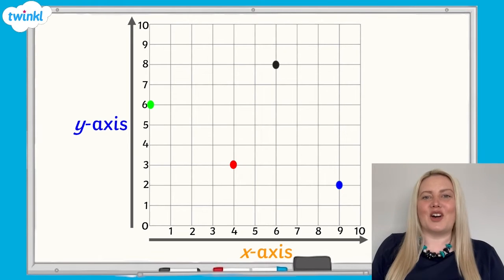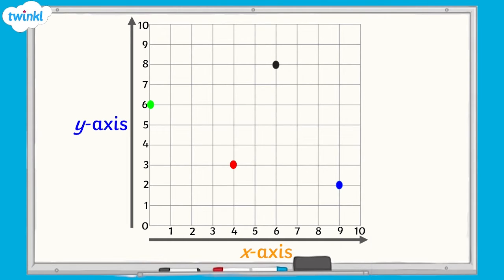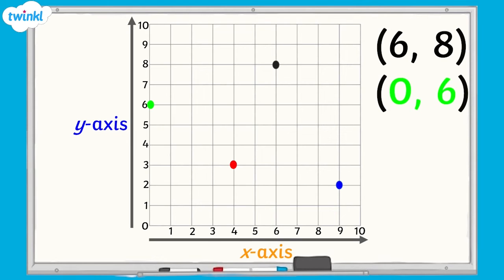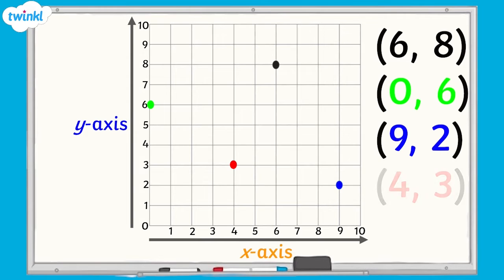How did you get on? Let's take a look at the answers. The coordinates for the black point were 6, 8. For the green point were 0, 6. For the blue point were 9, 2. And for the red point were 4, 3.